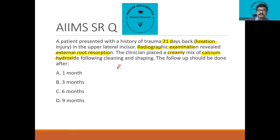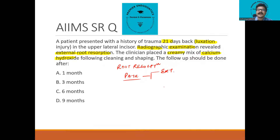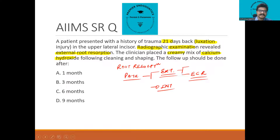Let us look at where exactly external inflammatory root resorption is placed in the classification. When we talk of root resorption, we have physiologic and pathologic. Under pathologic, we have external and internal root resorption. Under external, we have external inflammatory root resorption and external cervical root resorption. Today's topic of discussion is external inflammatory root resorption.